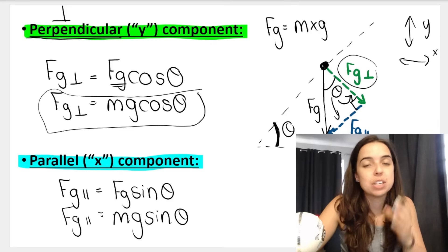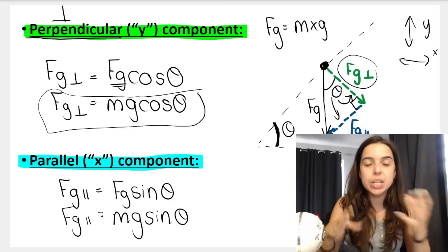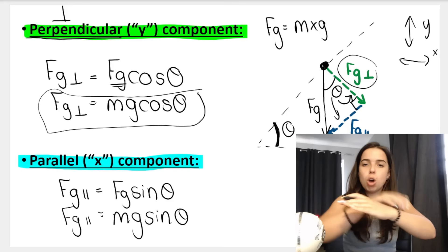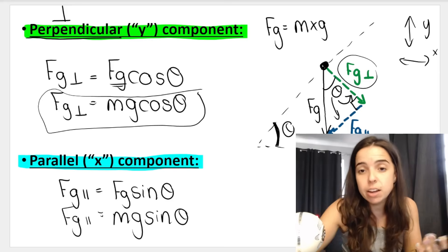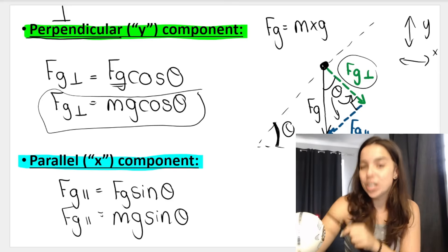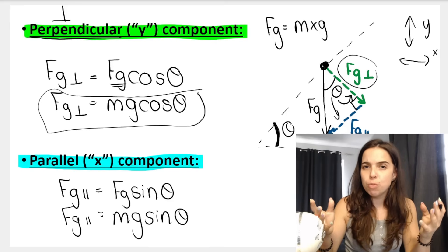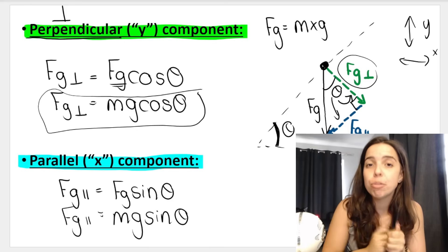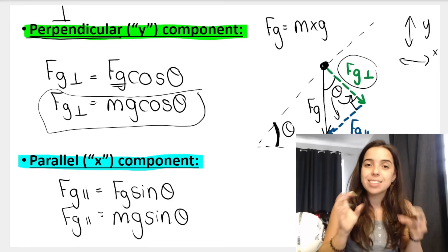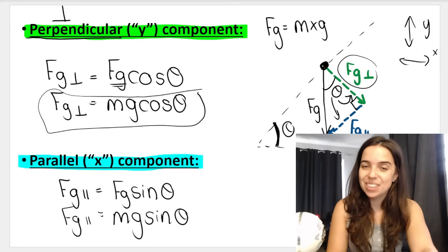Knowing how to do this becomes extremely important when you want to calculate the normal force and when doing Newton's calculations — objects on a slope, two objects being pulled up a slope, and so on. You need to know these basics to tackle the more difficult questions. If you want more videos on the basics, like how to calculate the normal force, check out the link in the description box below, and I will see you in the next video. Bye everyone.